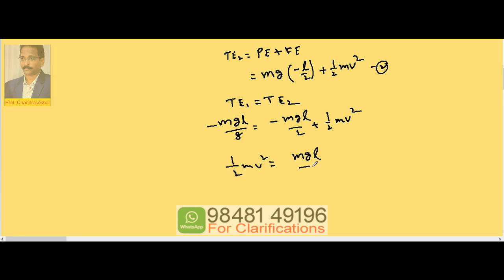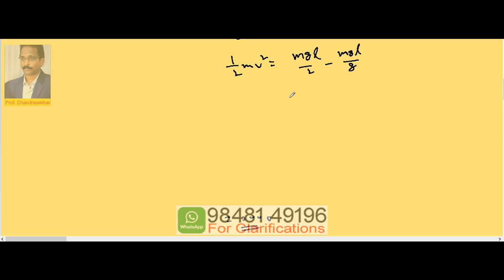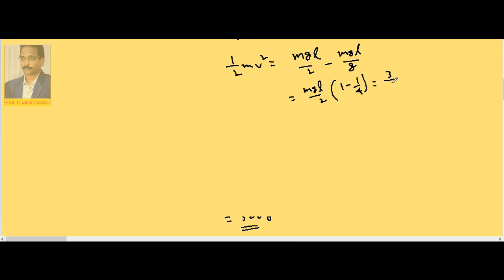So here if I take mgl by 2 common, this becomes 1 minus 1 by 4, nothing but 3 by 4 times mgl by 2, which is equal to half mv².